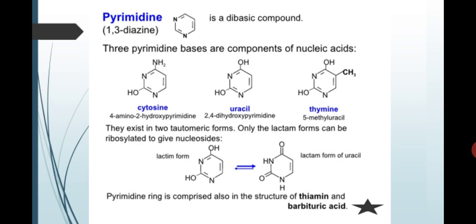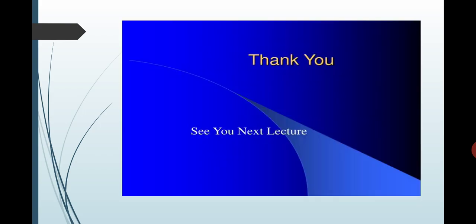Next is pyrimidine is a dibasic compound. There are three pyrimidine bases common in nucleic acids. There are examples that exist in two tautomeric forms. Only the lactam form can be ribosylated to give nucleosides. Pyrimidine ring comprises also structures of thiamine and barbituric acid.